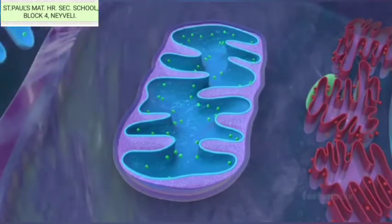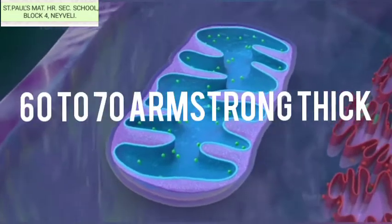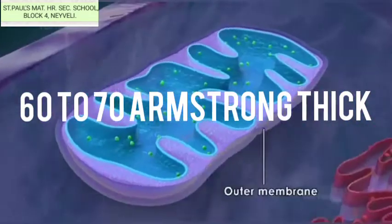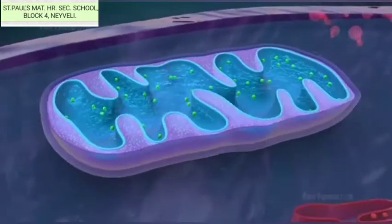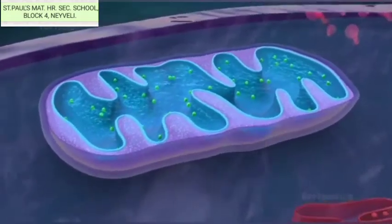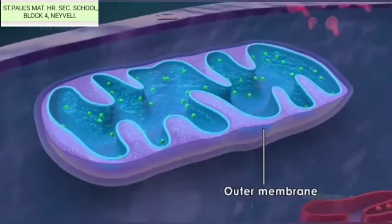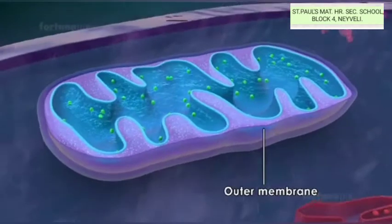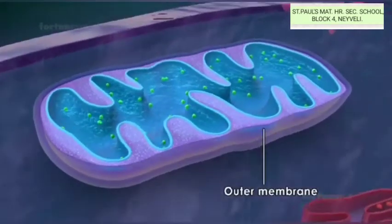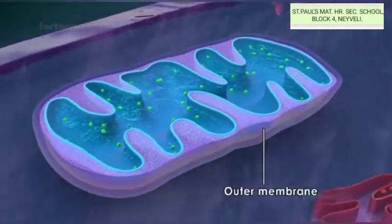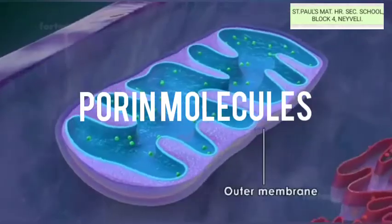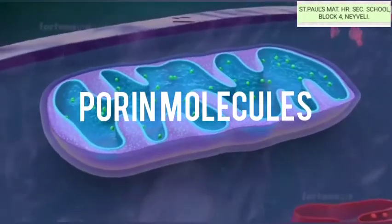Mitochondria consists of two membranes called inner and outer membrane. Each membrane is 60-70 Angstroms thick. The outer mitochondrial membrane is smooth and freely permeable to most small molecules. It consists of enzymes, proteins, and lipids, and has porin molecules which form channels for passage of molecules through it.